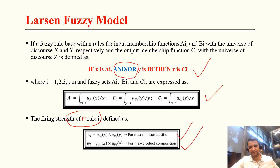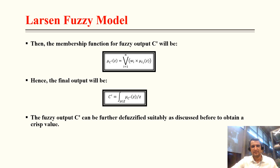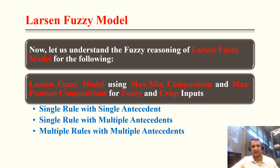After aggregation there are three cases: single rule with single antecedent, single rule with multiple antecedents, and multiple rules with multiple antecedents. Both max-mean and max-product compositions will be considered, and the input will be fuzzy.